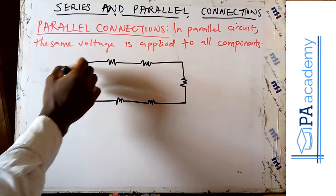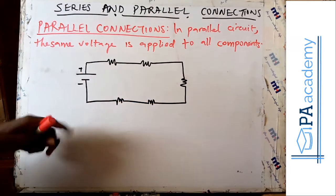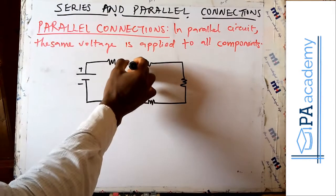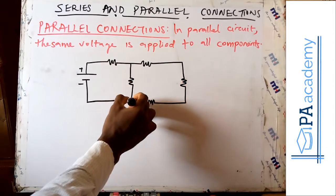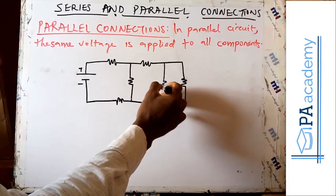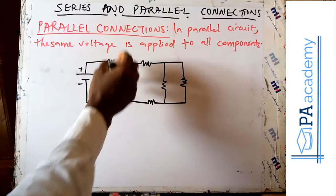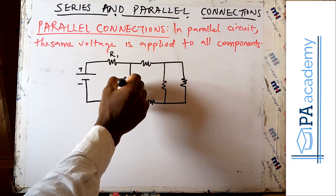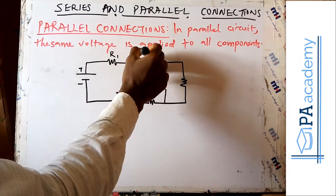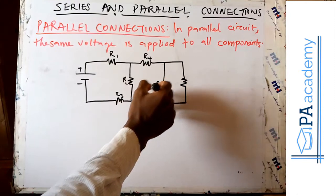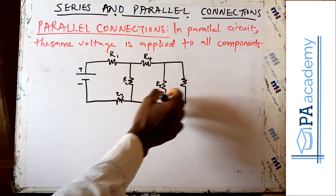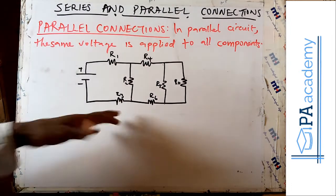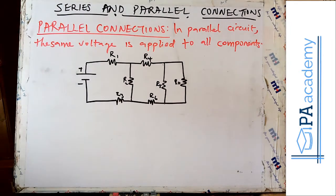So now it's looking like this — that would be a series circuit. But if I have something like this, with one resistor here, we can label them R1, R2, R3, R4, R5, R6, and R7. With this arrangement, we are now having a parallel connection.